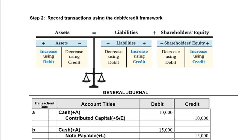Welcome back to this second video, which will focus on step two of the accounting process: recording those transactions that we analyzed for World Wide Webster. To record them, we're going to use the debit/credit framework. Here is our little set of rules using the debit/credit framework.